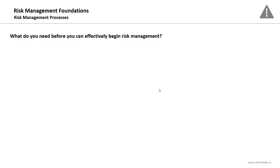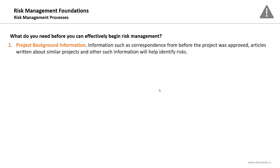There are ten artifacts — ten documents which you need to have before you kick off the risk management activities. Starting with the project background information: information such as correspondence from before the project was approved, articles written about similar projects, and other such information that will help you identify risks. Any information before the project charter was signed or the business case was approved will be useful as a risk identification tool.